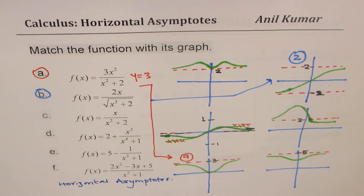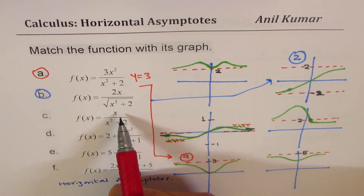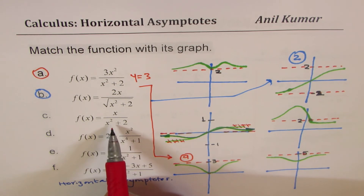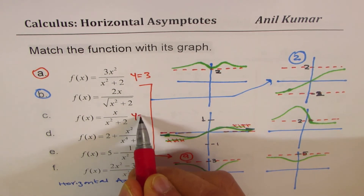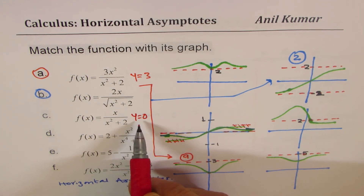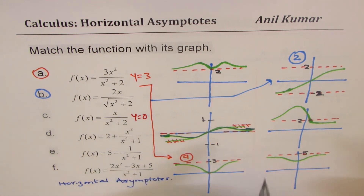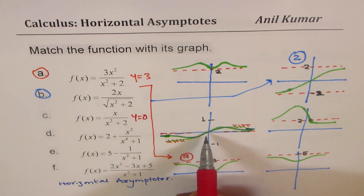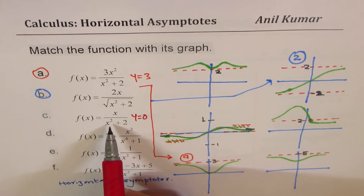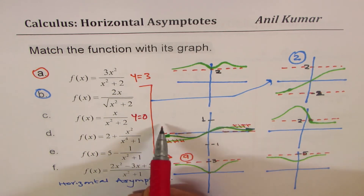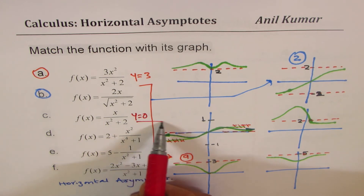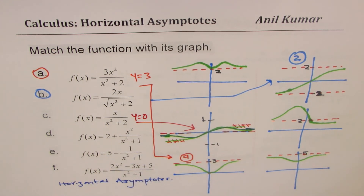The next one is x over x squared plus 1. There is no vertical asymptote, and since the degree of the denominator is higher, we have y equals 0 as our asymptote. The graph where y approaches 0 is the match. Testing: if x equals 0, it goes through 0; if x equals 1, we get one half. So this is part c.